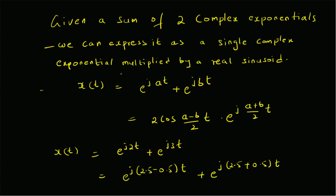To summarize, we have looked at how to write a sum of two complex exponentials as a single complex exponential multiplied by a real sinusoid. In general, x of t equal to e^(j·a·t) plus e^(j·b·t) can be rewritten as two times cos((a minus b)/2·t) multiplied by e^(j·(a plus b)/2·t) — that is the difference divided by two, times the exponential of the average of the coefficients.